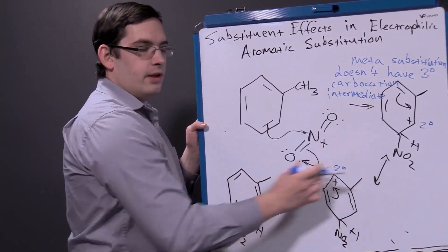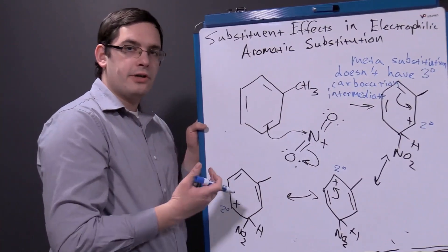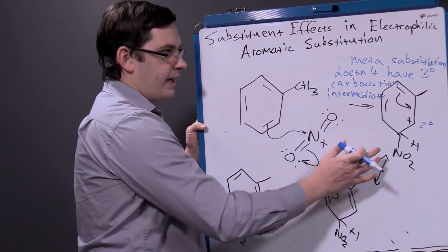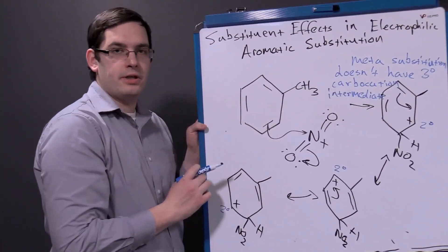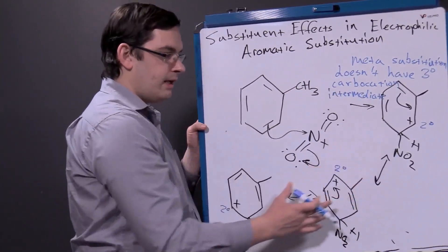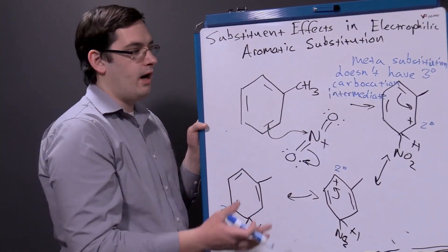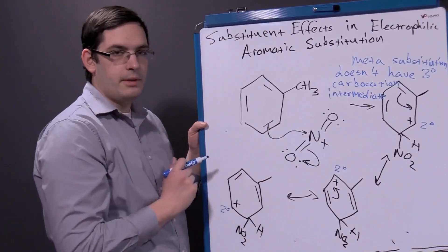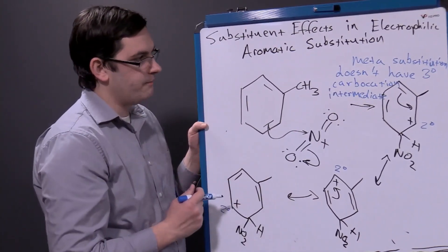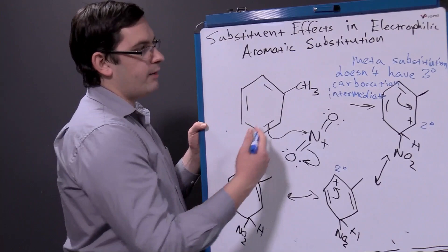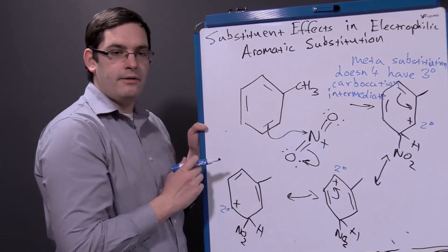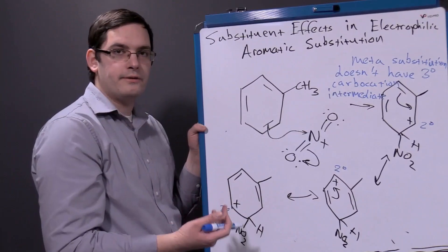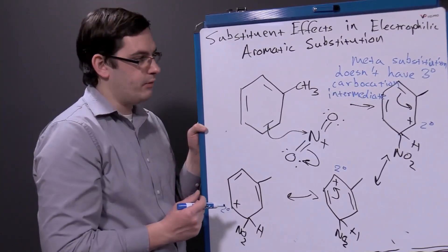Simply because of the lack of that more stable tertiary carbocation intermediate, our rate for this reaction when doing meta substitution is going to be somewhat slower. If our intermediate is slightly less stable, our reaction rate is going to be slightly slower — the stability of that intermediate determines the rate of the reaction. So our ortho rate will be higher than our meta rate, and because of that, the amount of ortho product we produce will be higher than the amount of meta product.